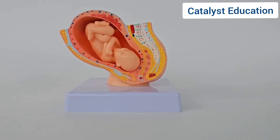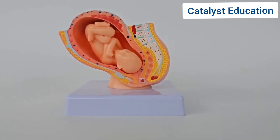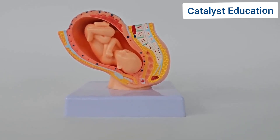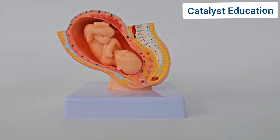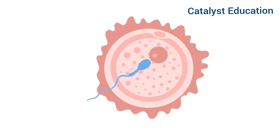Moving to females, the ovaries produce eggs, while the uterus nurtures the fertilized egg. Every month, one ovary releases an egg during ovulation, ready for fertilization.